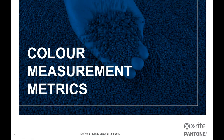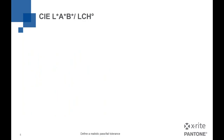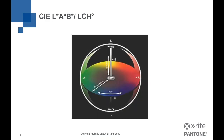Color measurement metrics — if we are doing instrumental color assessment, what numbers are we looking at, what scales are we talking about? For many of you, you will be familiar with the CIELAB equation, which has probably been the most commonly used across most industries since the late 1970s. In 1976 the CIE published the CIELAB color space, a three-dimensional space into which all colors we can see can be plotted in terms of lightness, red-green, and yellow-blue coordinates. Within this space we can also describe coordinates in terms of lightness, chroma or saturation, and hue angle.